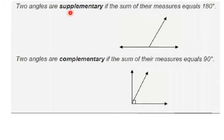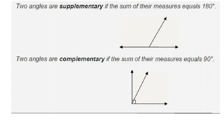Two angles are supplementary if the sum of their measures equals 180 degrees — if they're adjacent, they create a line. Two angles are complementary if the sum of their measures equals 90 degrees — if adjacent, they make a right angle. They don't have to be adjacent; they don't have to touch. They could be two separate angles.